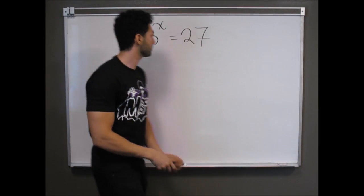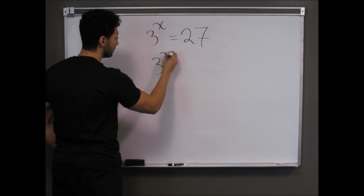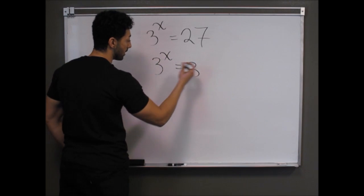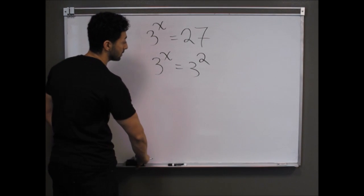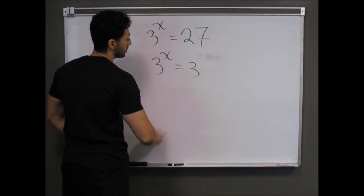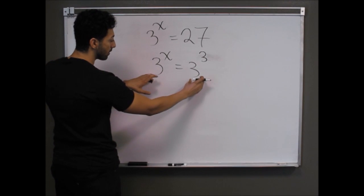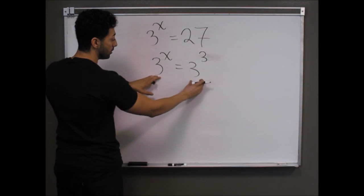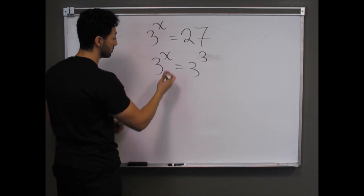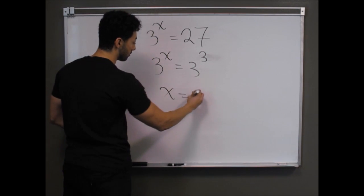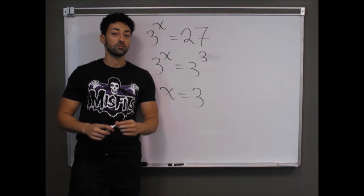For 3 to the x equals 27, I'm going to rewrite 27 with a base of 3. 3 squared is 9, so that's not it — 3 to the third power is 27. Now that we have a common base, we pull out the exponents as the new equation and get x equals 3, very similar to the previous example.